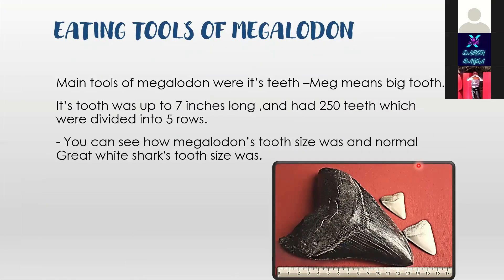Eating tools of the megalodon: The main tool of the megalodon — its name means 'big tooth' — its tooth was up to seven inches long, and it had 250 teeth divided into five rows. You can see how megalodon's tooth size compared to a normal great white shark's tooth in the picture below.